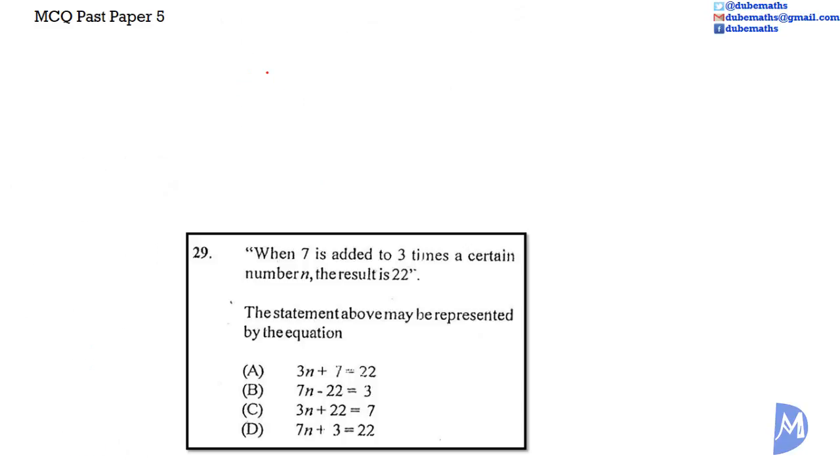Question 29. 3 times a certain number N is equal to 3 multiplied by N or 3N. 7 is added, 7 plus 3N. The result is 22 is equal to 22. 7 plus 3N is equal to 22 or 3N plus 7 is equal to 22. The answer is equal to A.